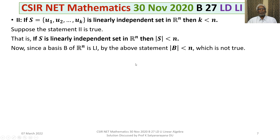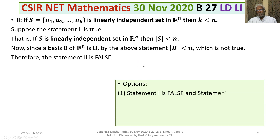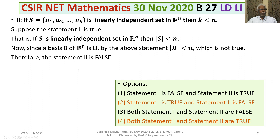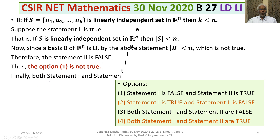But the order of the basis B of Rn is n, so this would require n less than n, which is not true. Therefore Statement 2 is also false. Looking at Option 1 — it states Statement 2 is true, but it is false, so Option 1 is eliminated. Option 3 states that both Statement 1 and Statement 2 are false, which is correct. Therefore Option 3 is the answer.